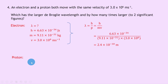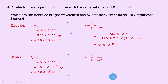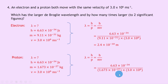For the proton, the only thing that changes is the mass. From the datasheet, the mass of a proton is 1.673 times 10 to the minus 27 kilograms, and the speed is the same at 3.0 times 10 to the 6 meters per second. Lambda equals h over mv gives 6.63 times 10 to the minus 34 over 1.673 times 10 to the minus 27 times 3.0 times 10 to the 6, which gives 1.3 times 10 to the minus 13 meters.